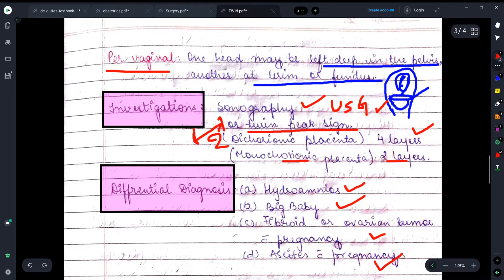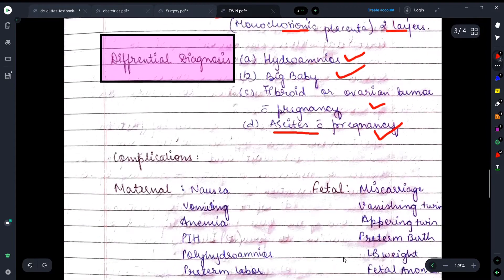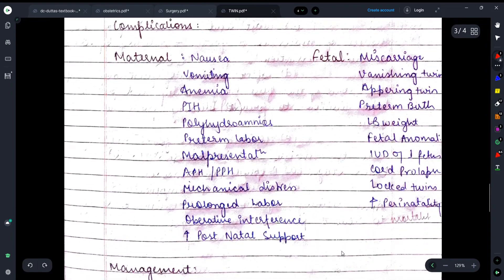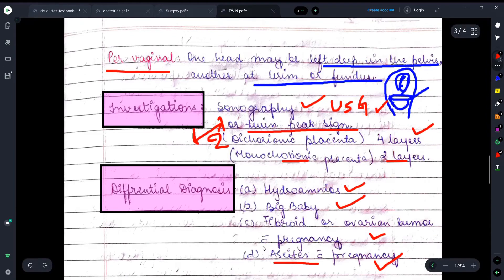Moving on, ascites with pregnancy. What is ascites? When in the peritoneum there is fluid accumulation, that condition is known as ascites, it's a dropsical condition. So if it's with pregnancy, obviously this can also be observed there.